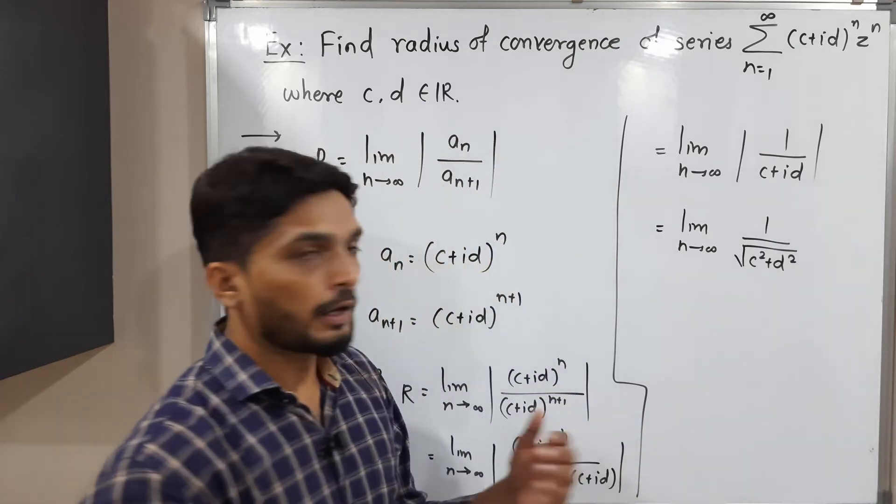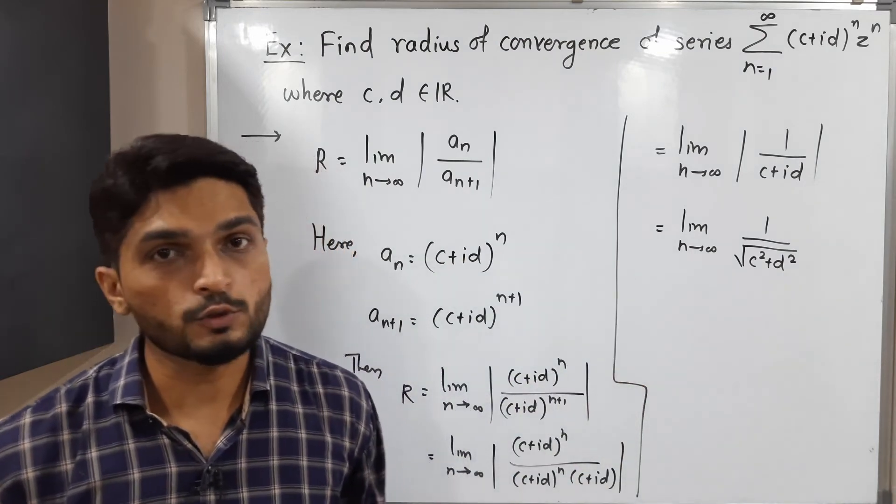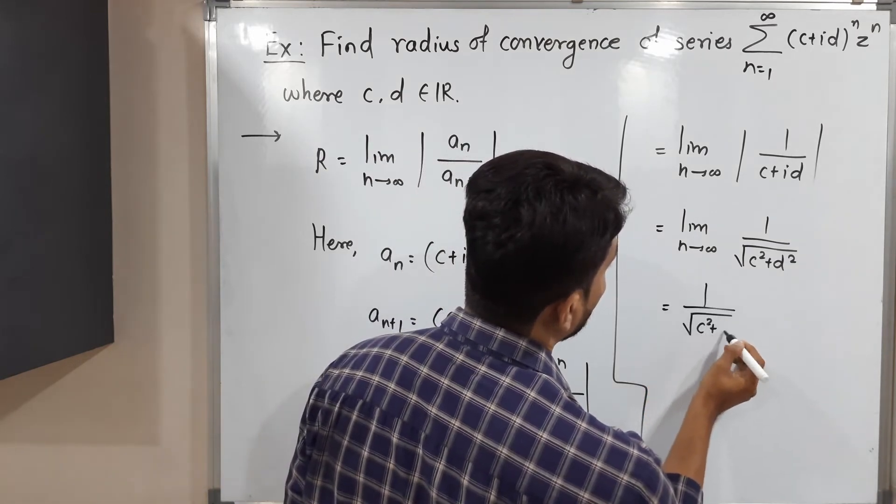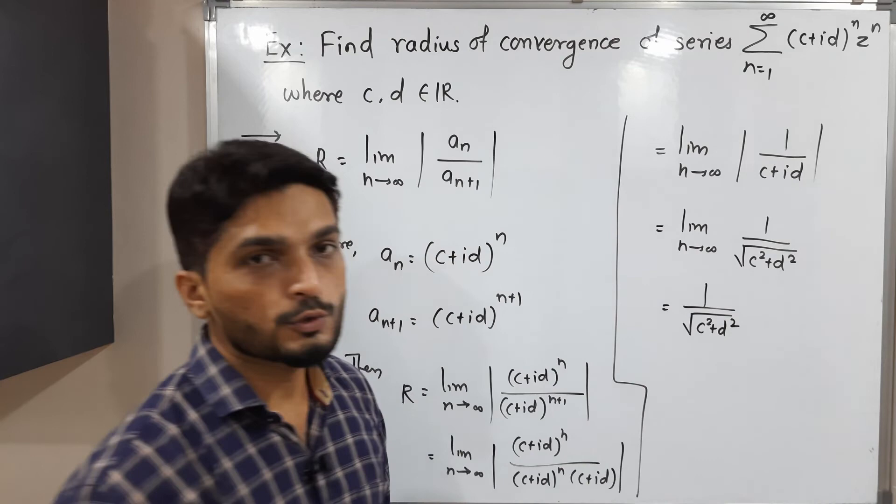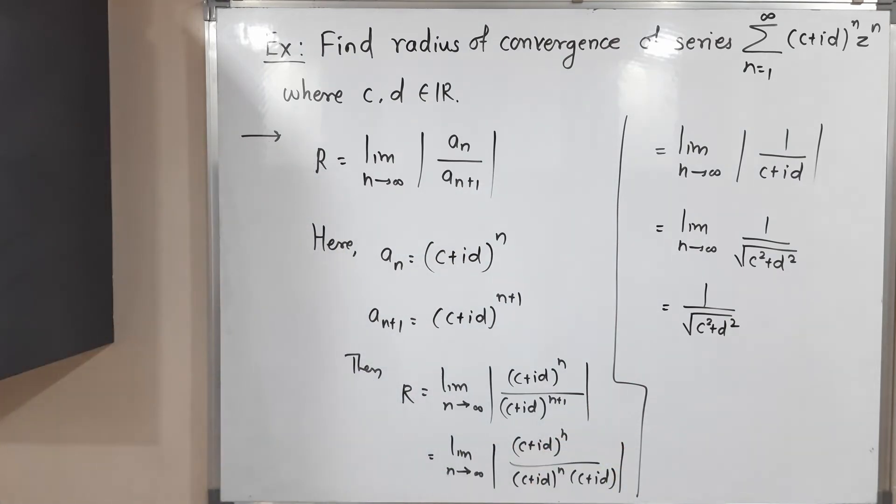Now I am applying the limit, but see, it is a constant, it is independent of n, so you will have the same term. This is equal to 1 upon square root of c squared plus d squared. So this is the required radius of convergence. Make a screenshot of it, then we will go further.